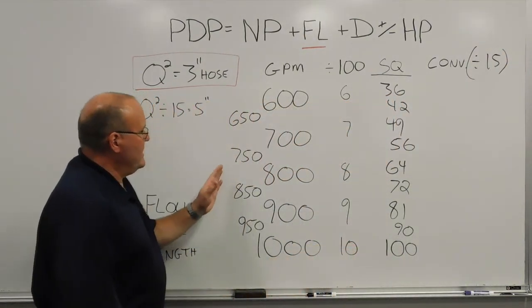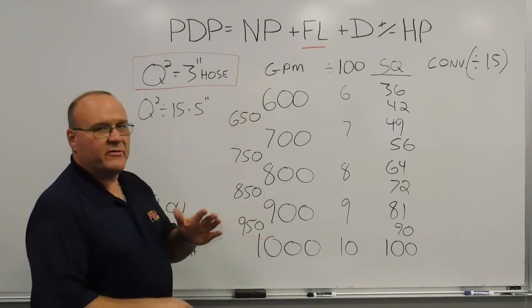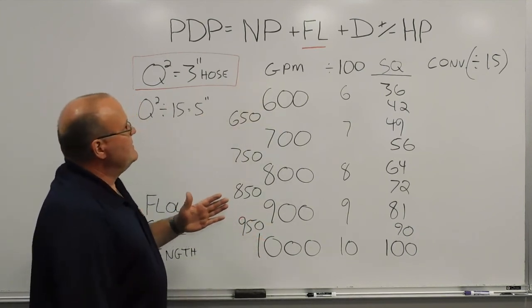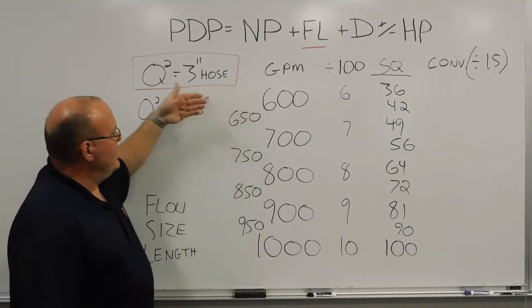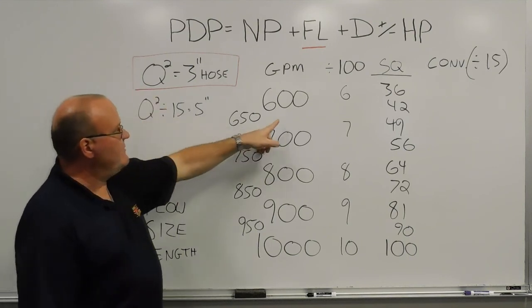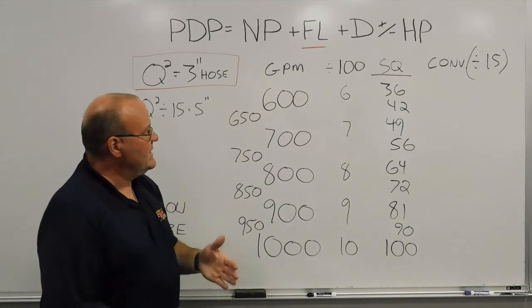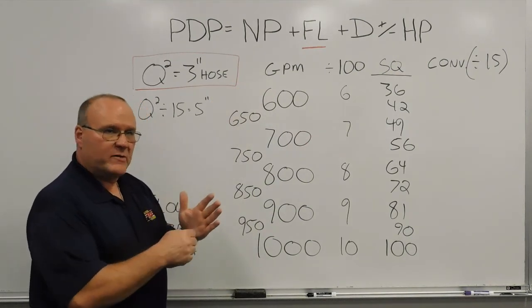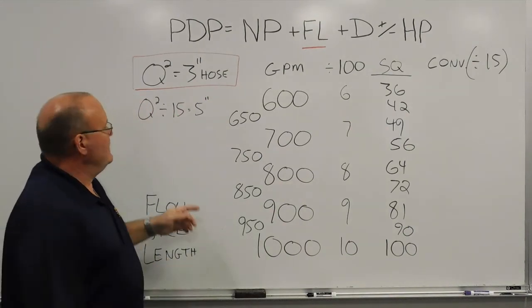So we've already done 600 to 1000 gallons a minute using the 3 inch method, which basically we take the gallon per minute flow, we account for the hose size by doing this first factor of Q squared, we divide by 100, which is essentially knocking off the zeros. So 600 gallons a minute, 6 times 6 gives you 36 pounds of friction loss for 100 feet of 3 inch hose.